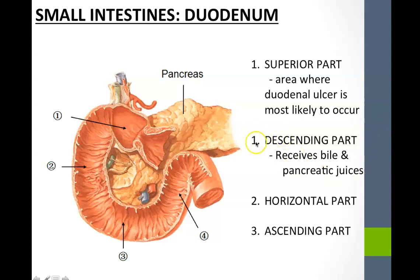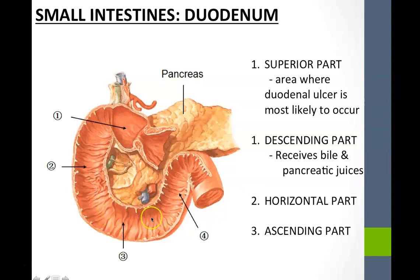The second part is the descending portion of the duodenum, which has an opening called the major duodenal papilla — and sometimes a minor duodenal papilla — that allow bile and pancreatic juices into the duodenum to neutralize acidic contents and emulsify fats. The third part is the horizontal portion, and the fourth is the ascending part, moving upward. The duodenum is quite short overall.